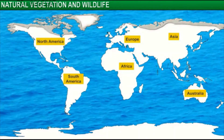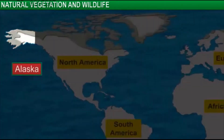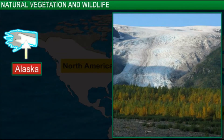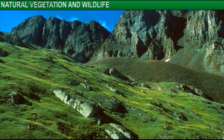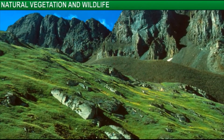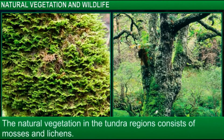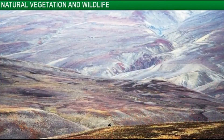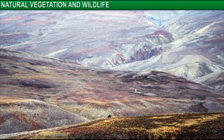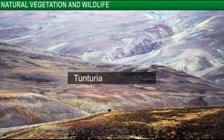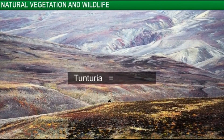In the cold polar regions, such as Alaska, the soil is frozen most of the time and it is impossible for trees to grow. Therefore, the natural vegetation in the tundra regions consists of mosses and lichens. In fact, the word 'tundra' comes from the Finnish word 'tunturia,' which means treeless.